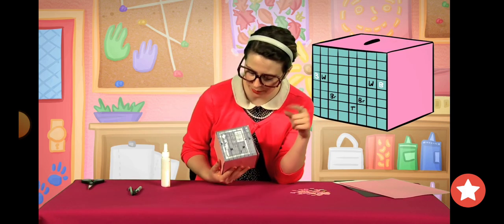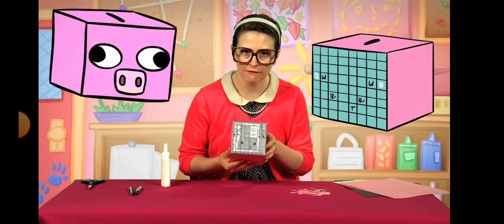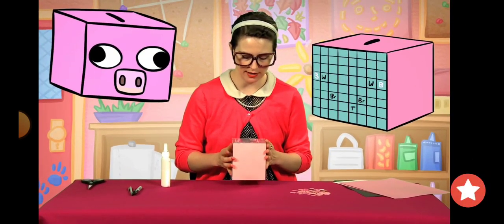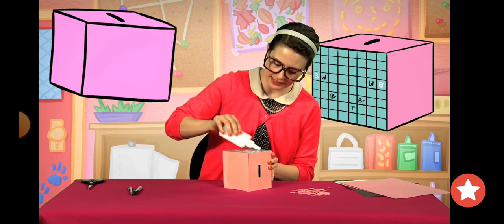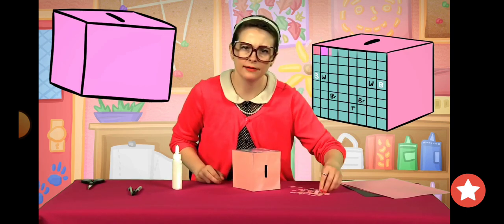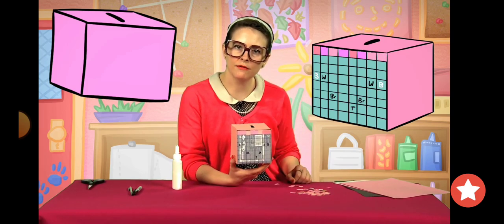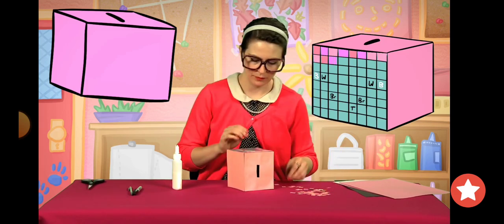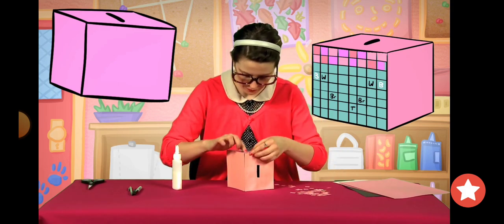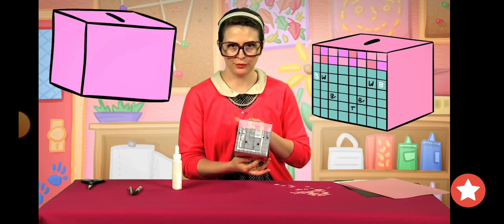But we're not done yet because we've got to put that face on there. Start by smearing on some glue, getting it kind of evenly spaced. A couple squares on this piece. And there you go, look at that, I did my first row. There's row number two.